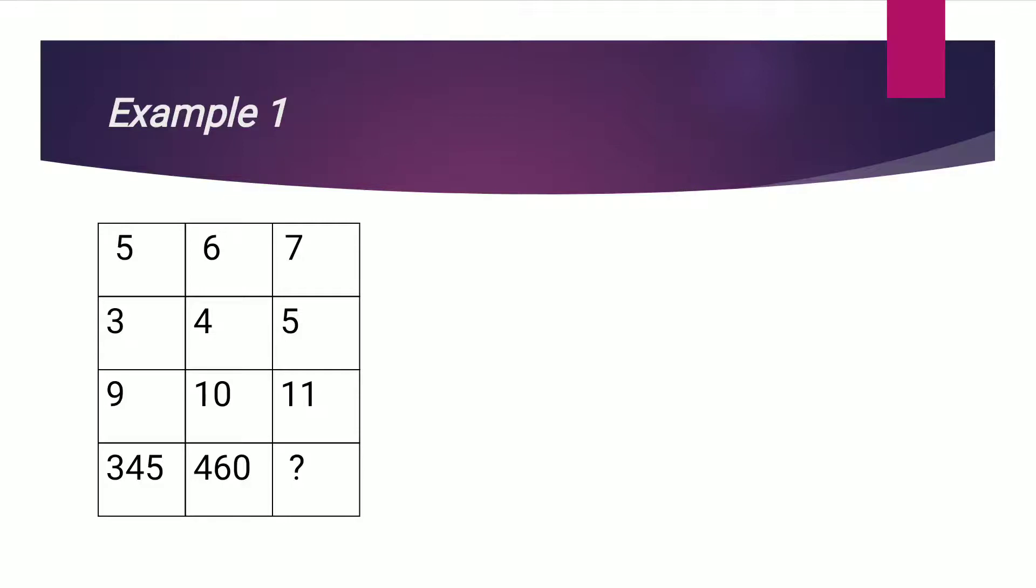Similarly, 6 tens are 60 plus 400 we get 460. Therefore 7 elevens are 77 plus 500 we get 577. Let's see the steps.